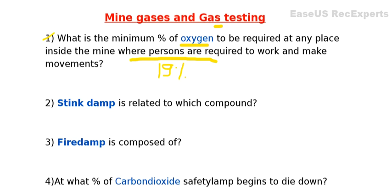Now the second question: stink damp is related to which compound? The correct answer is hydrogen sulfide, which we call H2S. Hydrogen sulfide is called stink damp, and if you talk about its smell, it smells like a rotten egg. Remember: stink damp is related to H2S, hydrogen sulfide.